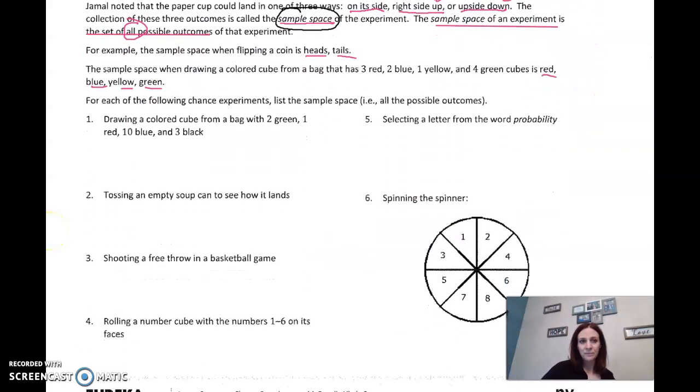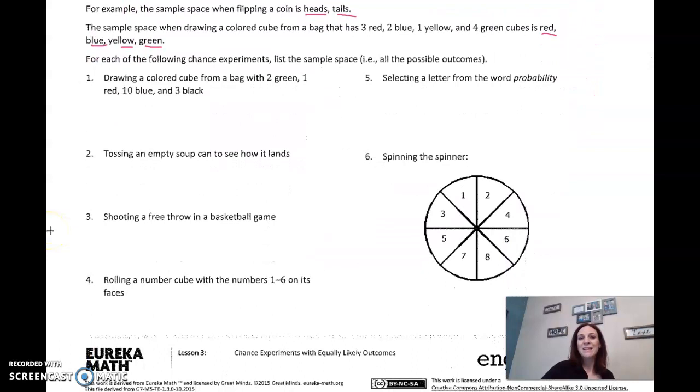So let's look at some examples. For each of the following experiments, list the sample space—all the possible outcomes. Drawing a colored cube from a bag with two green, one red, ten blue, and three black. When I reach in and grab a cube out, what could it possibly be? It could be green, red, blue, and black. That's the sample space, all the possible outcomes.